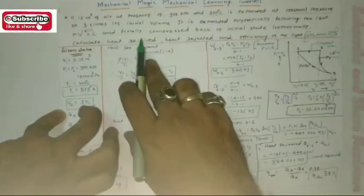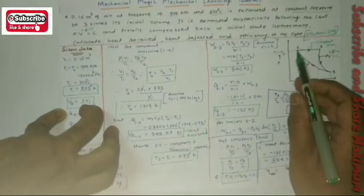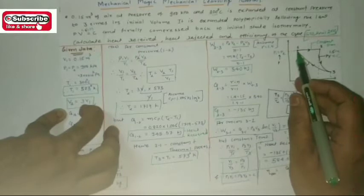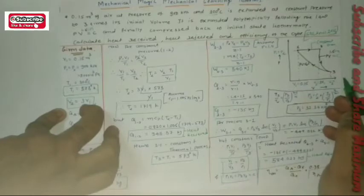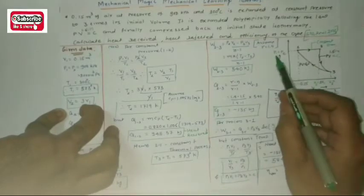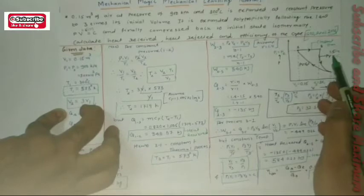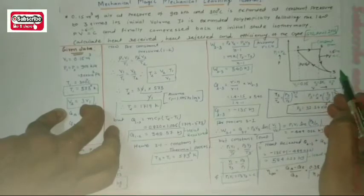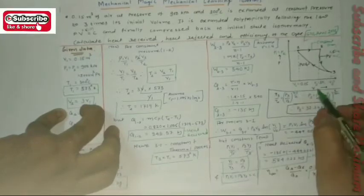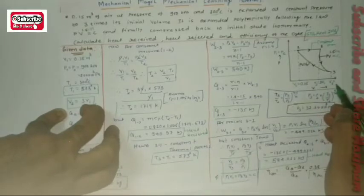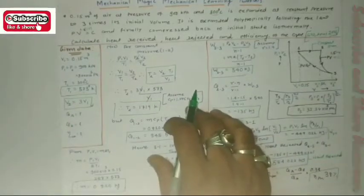Finally the gas is compressed back to its initial state. Point 3 to 1 returns to the initial state isothermally, where PV = constant — a constant temperature process. Since P1 = P2 due to the constant pressure process, and PV^1.5 = constant for the polytropic process, V1 is given, V2 = 3 × V1, and V3 is to be found.